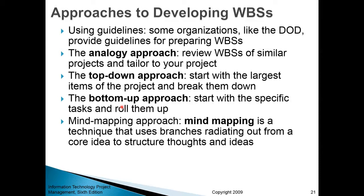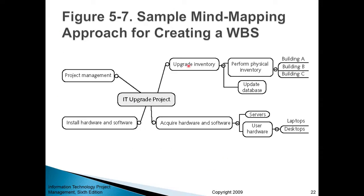Then there's the bottom-up approach. Some people aren't good at thinking at a high strategic level, so they prefer thinking about specific steps needed to accomplish the scope statement, and then organize those small items into more general categories. Or sometimes you use a mind-mapping approach — a creative approach where you start with the overall idea and create branches. For an IT upgrade project, for example, you'd branch into upgrading inventory, acquiring hardware and software, installing hardware and software, and add further leaves organically.